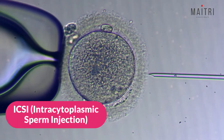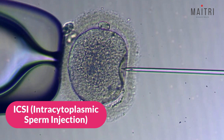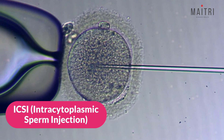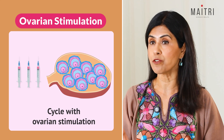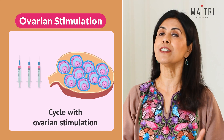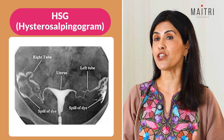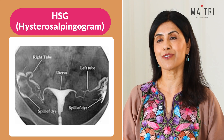ICSI, intracytoplasmic sperm injection: a single sperm is injected directly into the egg during IVF. It is useful for severe male infertility. Ovarian stimulation: using medications to encourage multiple eggs to mature for IVF or IUI. HSG, hysterosalpingogram: a special X-ray to check if your fallopian tubes are open and the uterus is healthy.